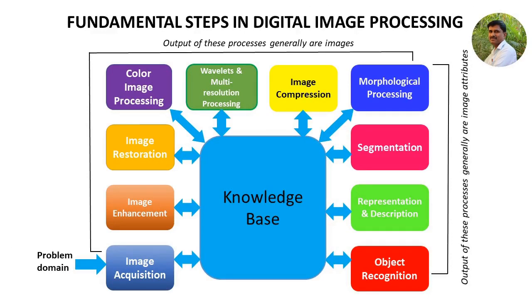The fundamental steps in digital image processing are: Image Acquisition, Image Enhancement, Image Restoration, Color Image Processing, Wavelets and Multi-Resolution Processing, Image Compression, Morphological Processing, Segmentation, Representation and Description, and Object Recognition. We can observe that the outputs of steps from image acquisition to morphological processing are generally images.